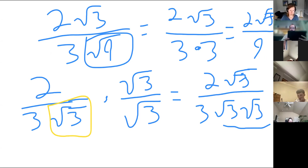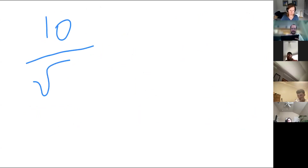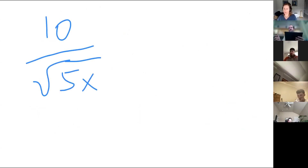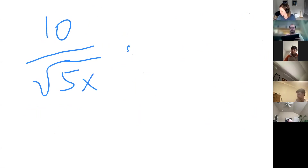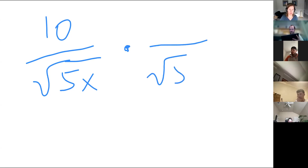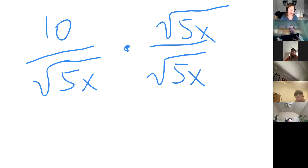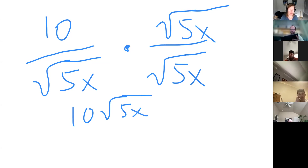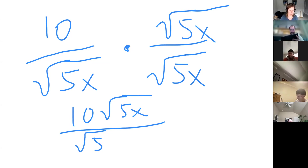Now we get to the good stuff. We have 10 over the square root of 5x. Who wants to help me through this one? What am I multiplying by? The square root of 5x. And if I do it to the bottom, we have to do it to the top. The top is going to give me 10 square root of 5x.